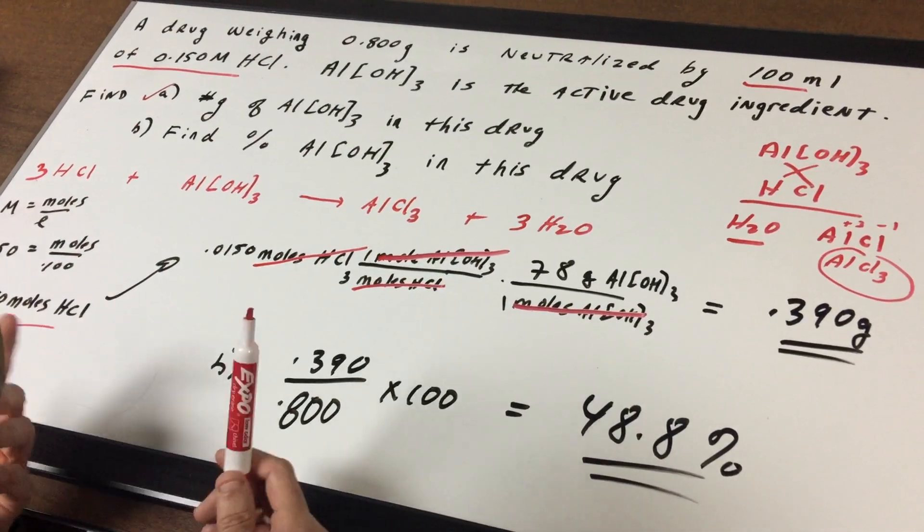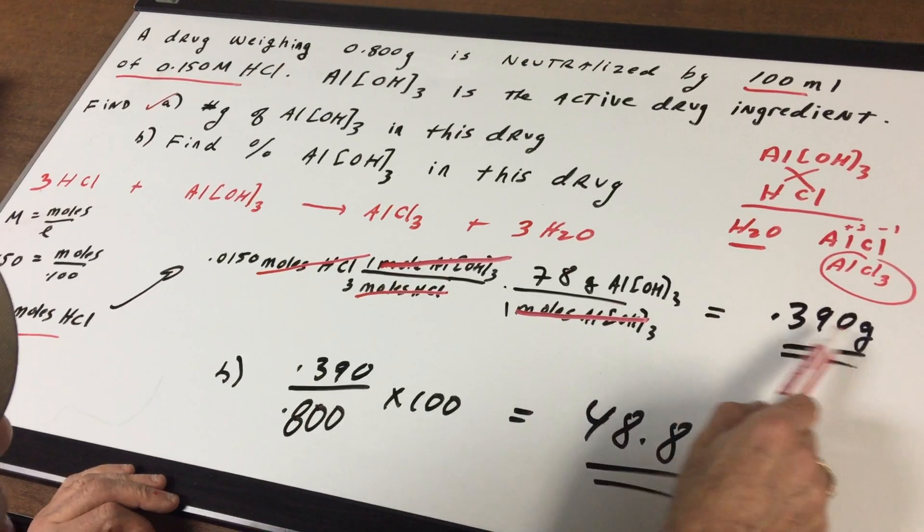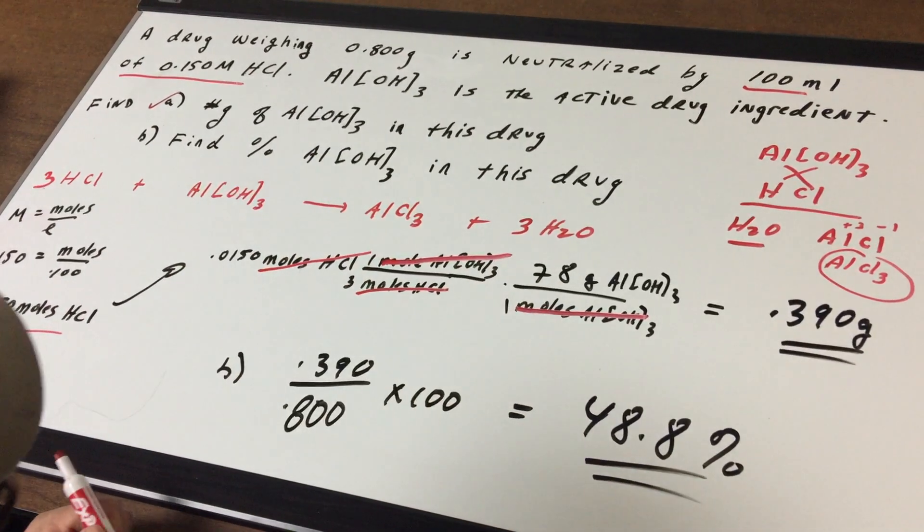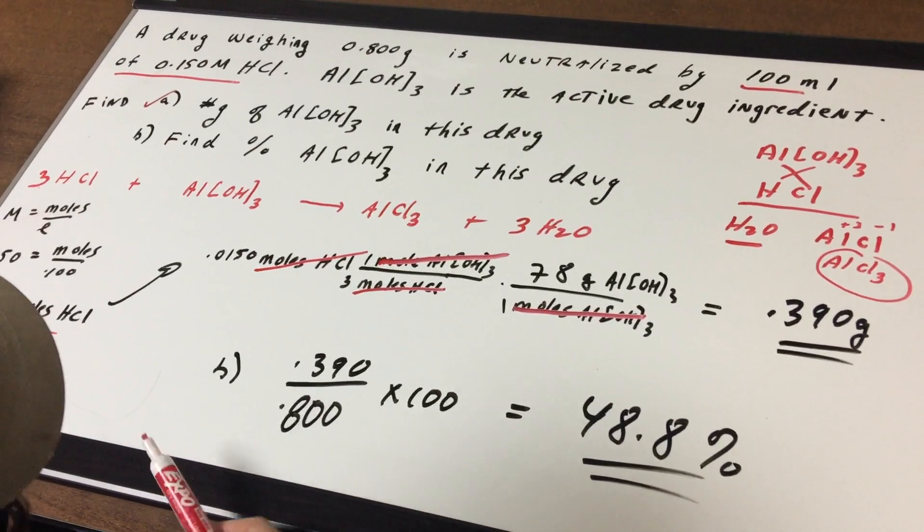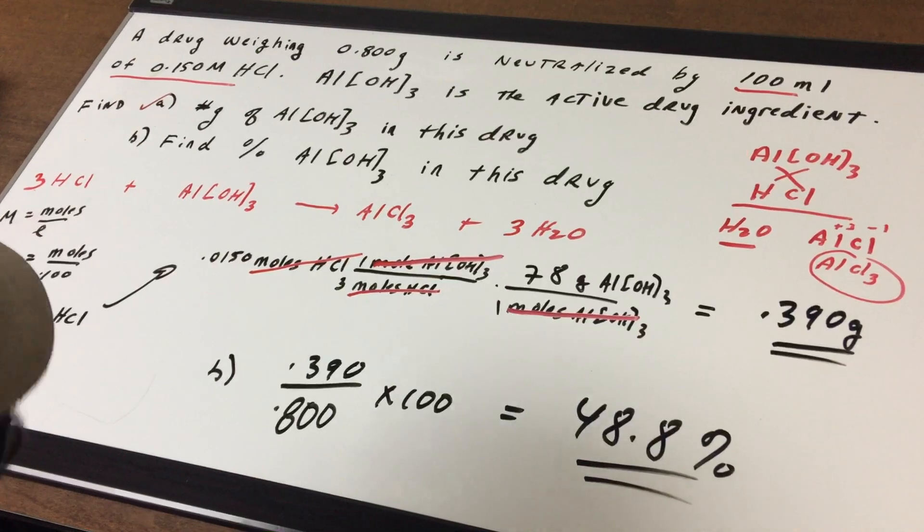Part B, I'm going to be nice to you. Find the percent. Percent is part over the whole times 100. The part that we just found was 0.390. The whole thing was 0.80. So this is roughly 0.4 over 0.8 times 100. It's roughly 50%. And when you did it on a calculator, it came out to 48.8%.